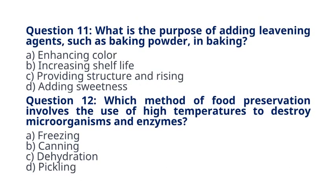Question 11. What is the purpose of adding leavening agents, such as baking powder, in baking? A. Enhancing Color B. Increasing Shelf Life C. Providing Structure and Rising D. Adding Sweetness. The correct answer to question 11 is option C. Providing Structure and Rising. Explanation: leavening agents release gases during baking, causing the dough or batter to rise, and providing the desired structure to baked goods.